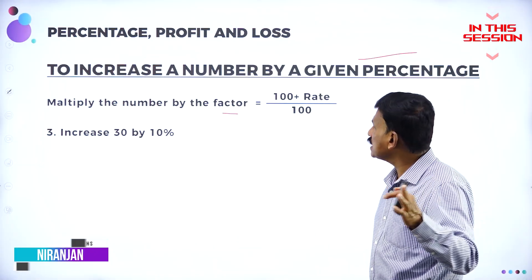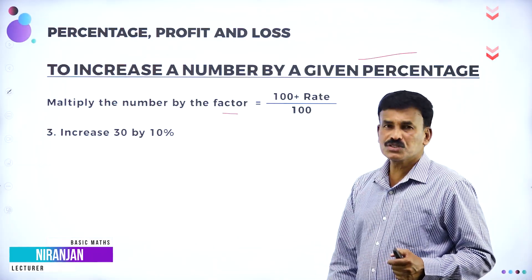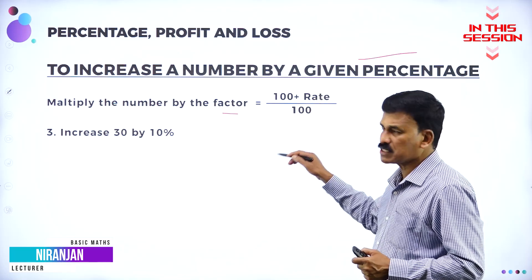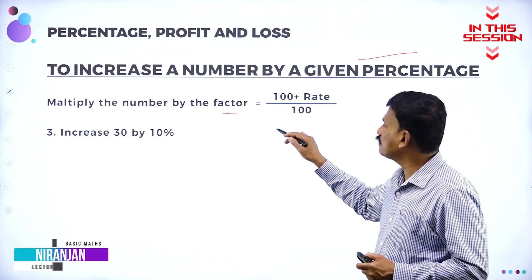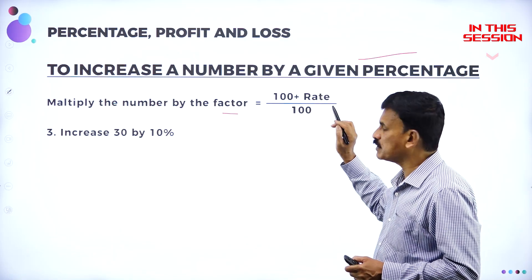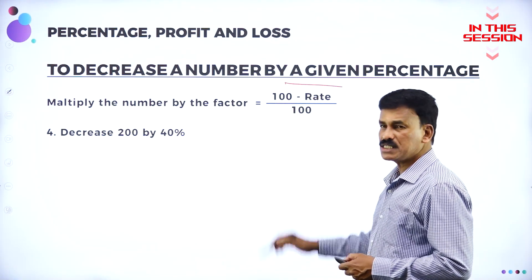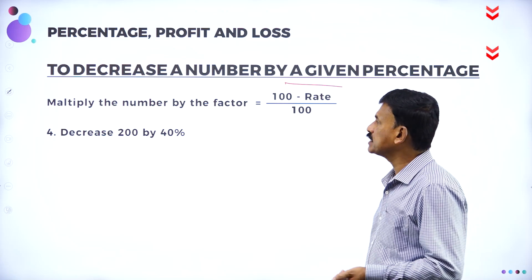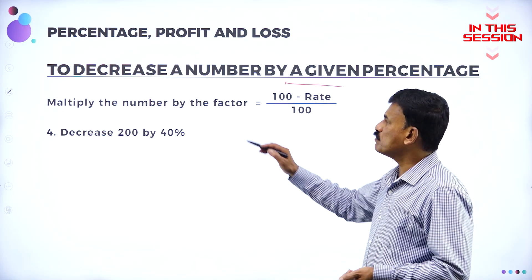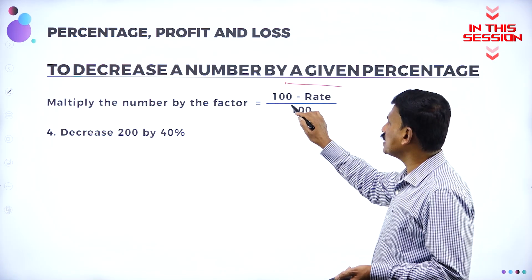To increase a number by a given percent, just multiply by the factor. The factor we are going to multiply is 100 plus rate divided by 100. To decrease a number by a given percentage, multiply the number by the factor 100 minus rate divided by 100.